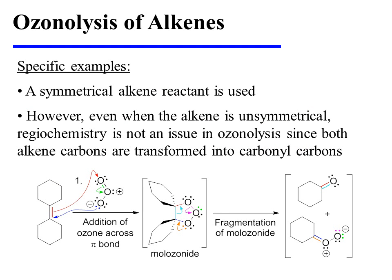In this specific example, a symmetrical alkene reactant is used. However, even when the alkene is unsymmetrical, regiochemistry is not an issue in ozonolysis, because both alkene carbons are transformed into carbonyl carbons. The reaction begins with the addition of ozone across the alkene pi bond, entailing three mechanistic arrows. The alkene pi bond attacks a terminal oxygen of ozone, displacing an oxygen-oxygen pi bond onto the central oxygen of ozone, thereby neutralizing its charge. Finally, the anionic oxygen attacks the alkene carbon that would otherwise have lost a bond, yielding the unstable molozonide, which contains two weak oxygen-oxygen bonds.